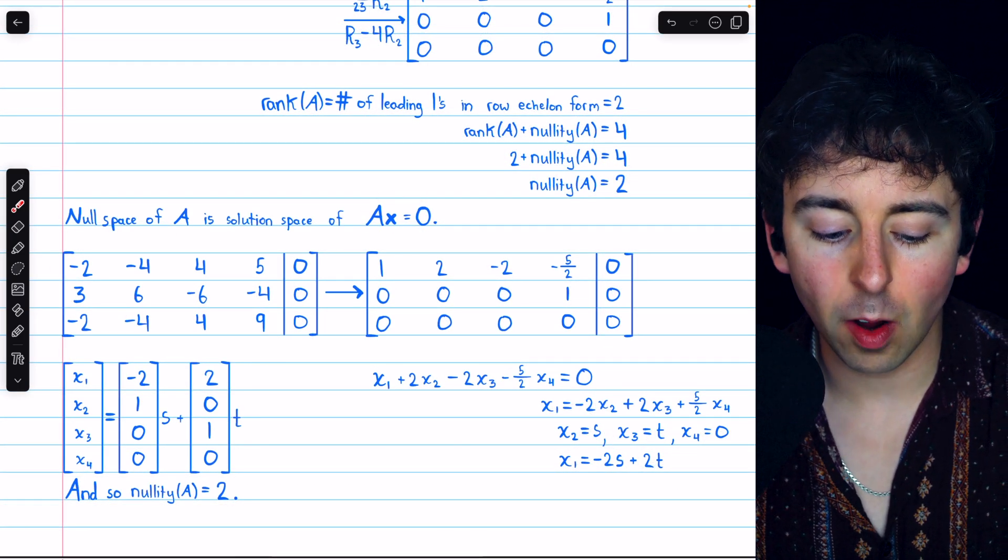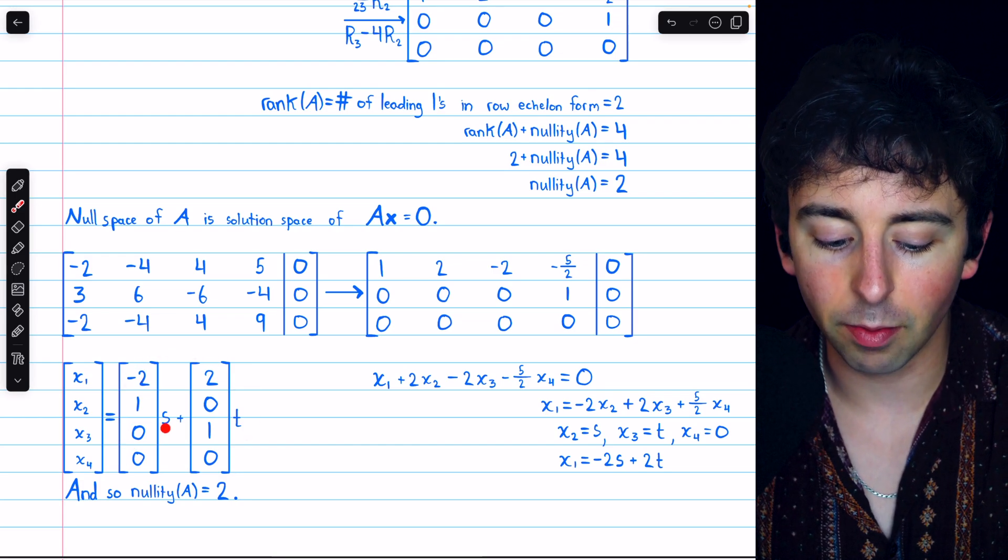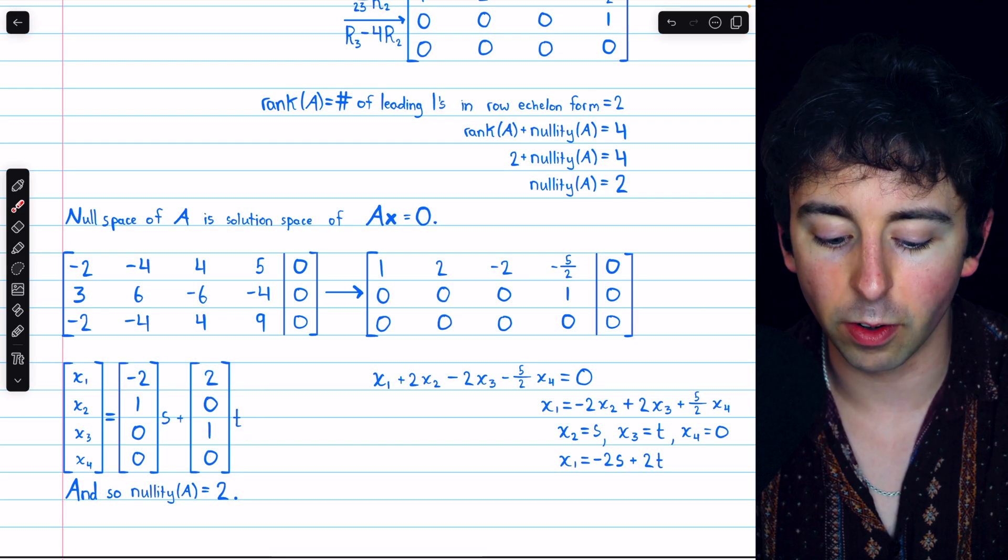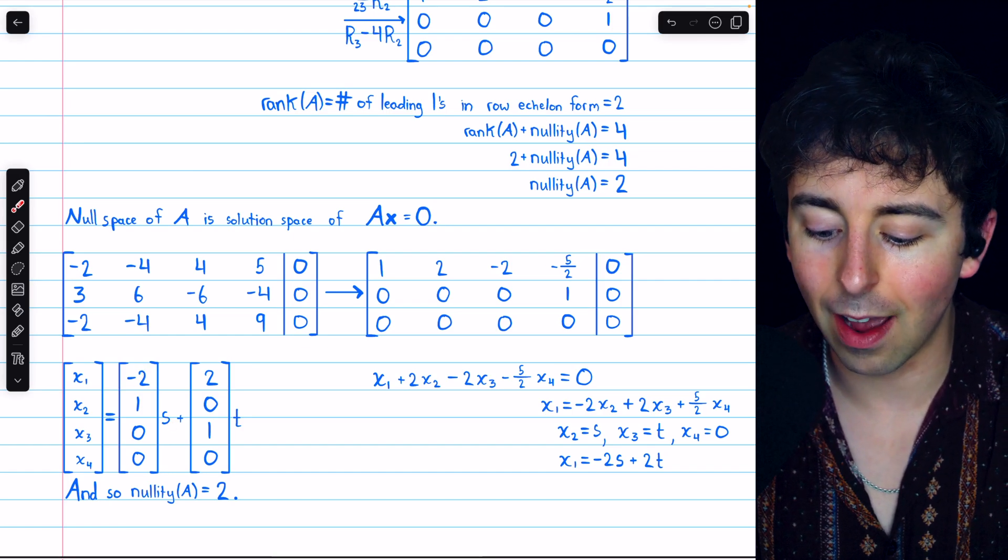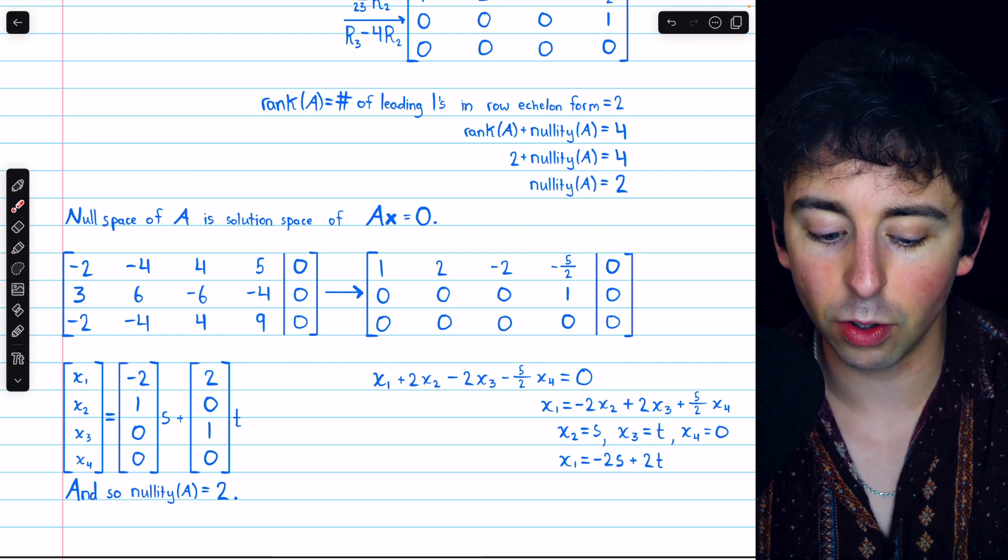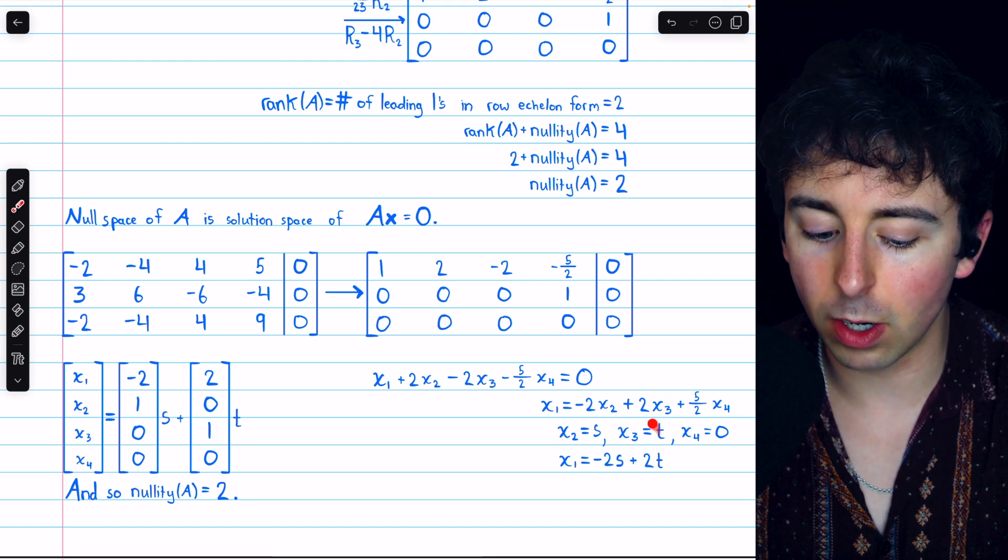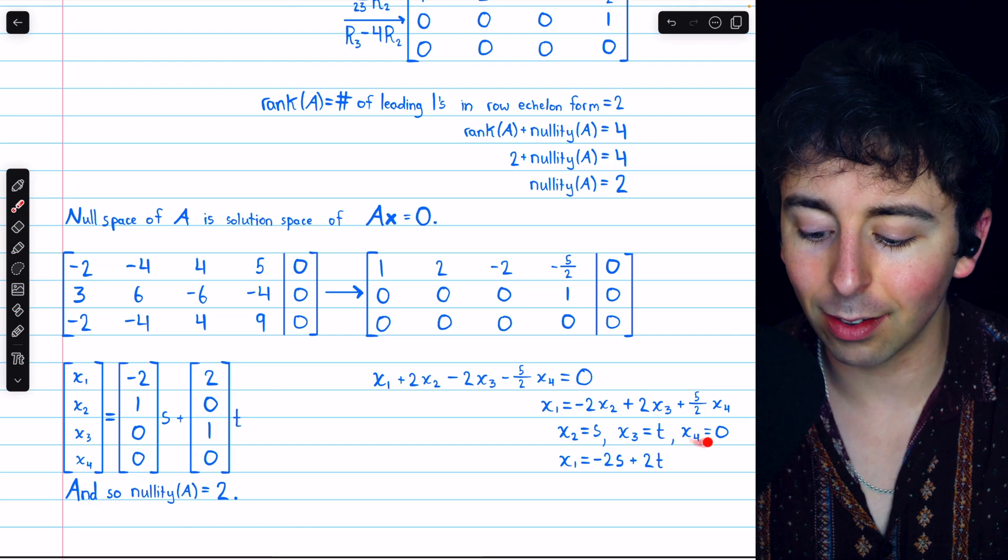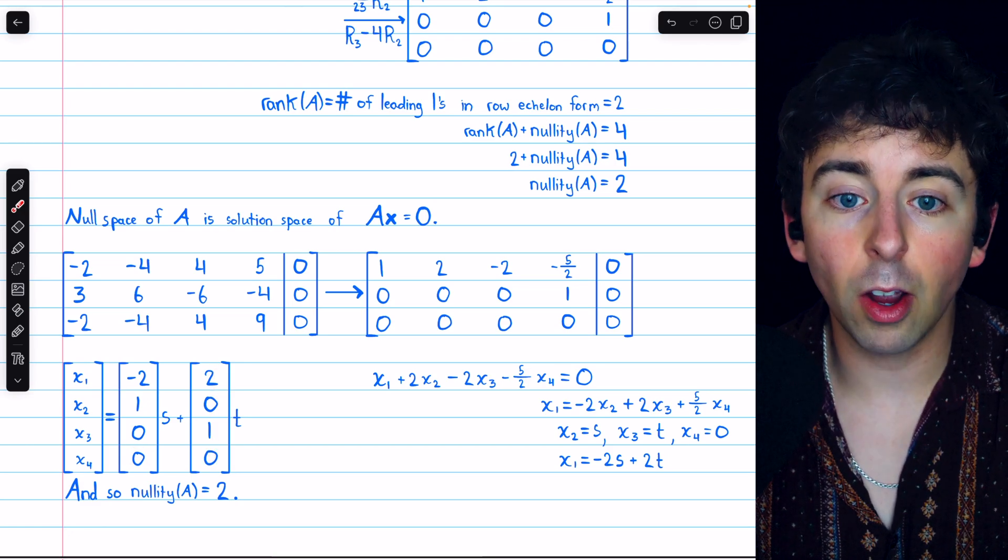Then, the solutions to this system are vectors of this form, the coefficients of s plus these coefficients of t. For example, the coefficients of s, we have that x1 has negative 2s, x2 has 1s, x3 has no s's, and x4 has no s's, similarly for this t coefficient vector.